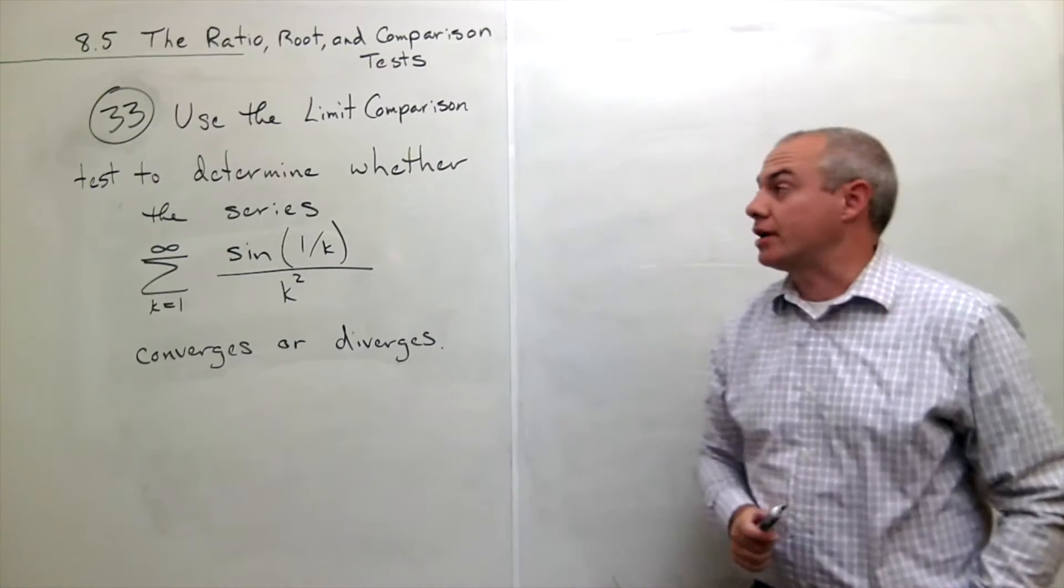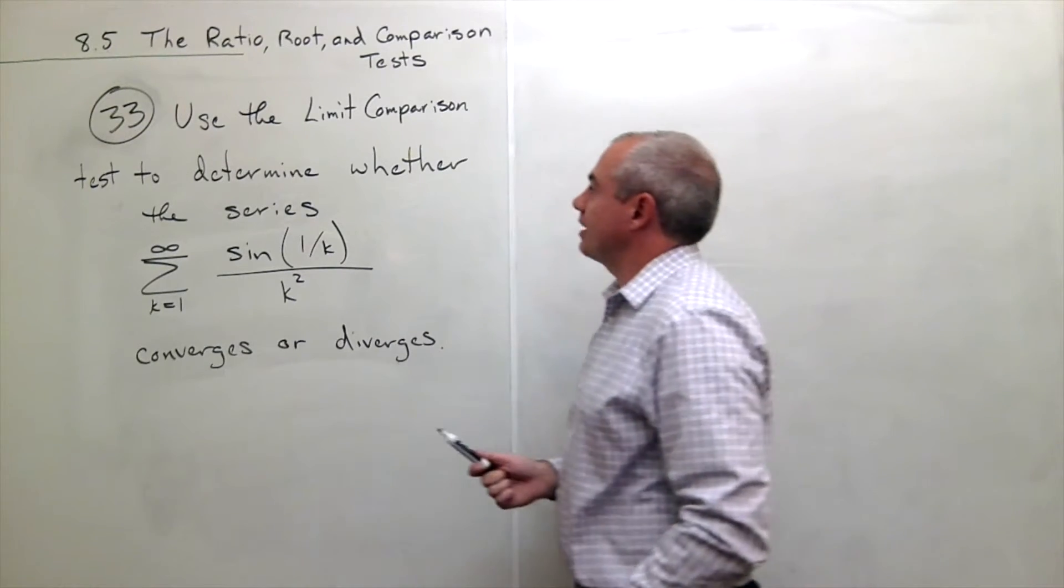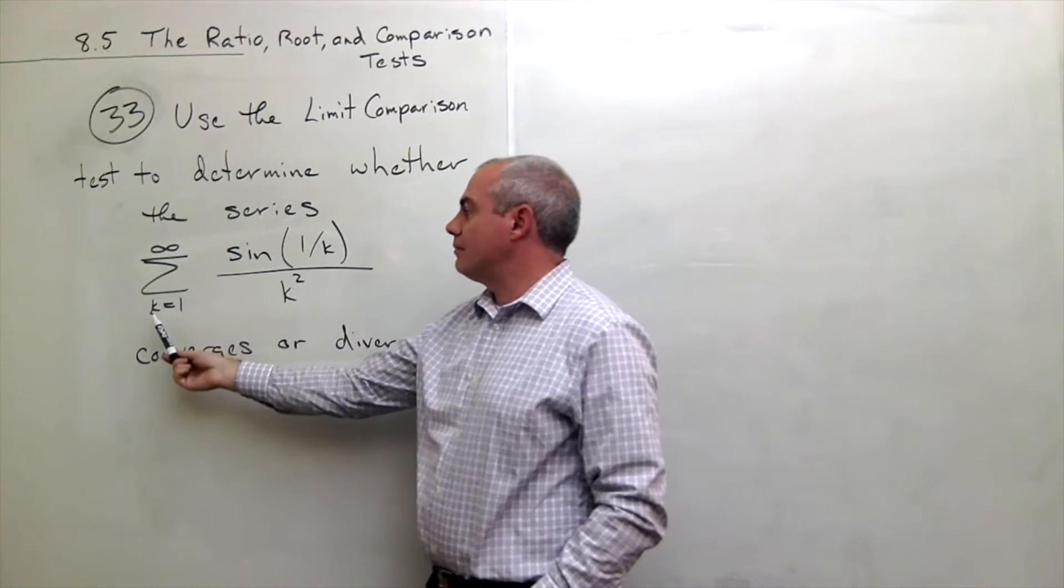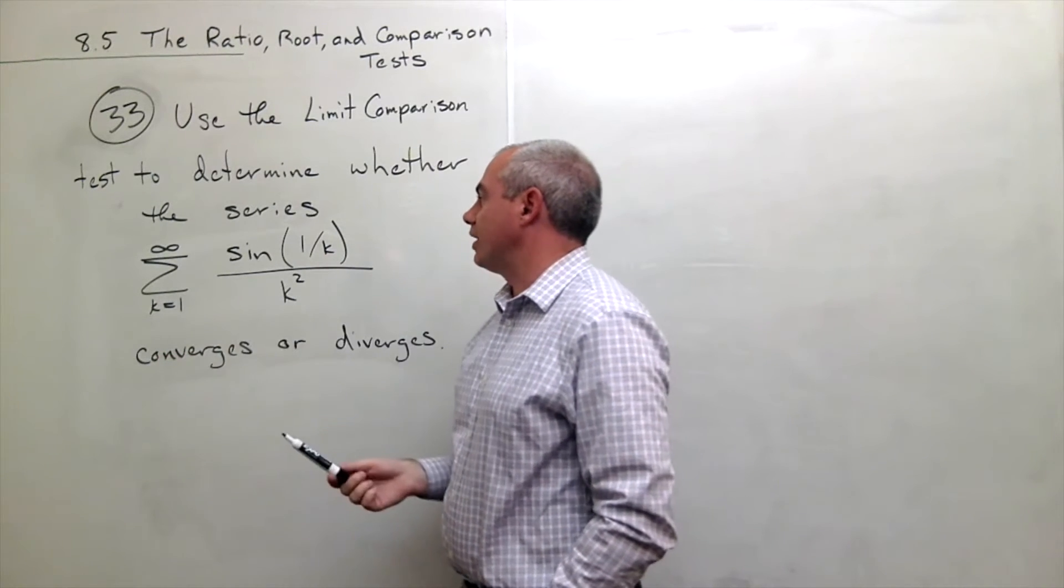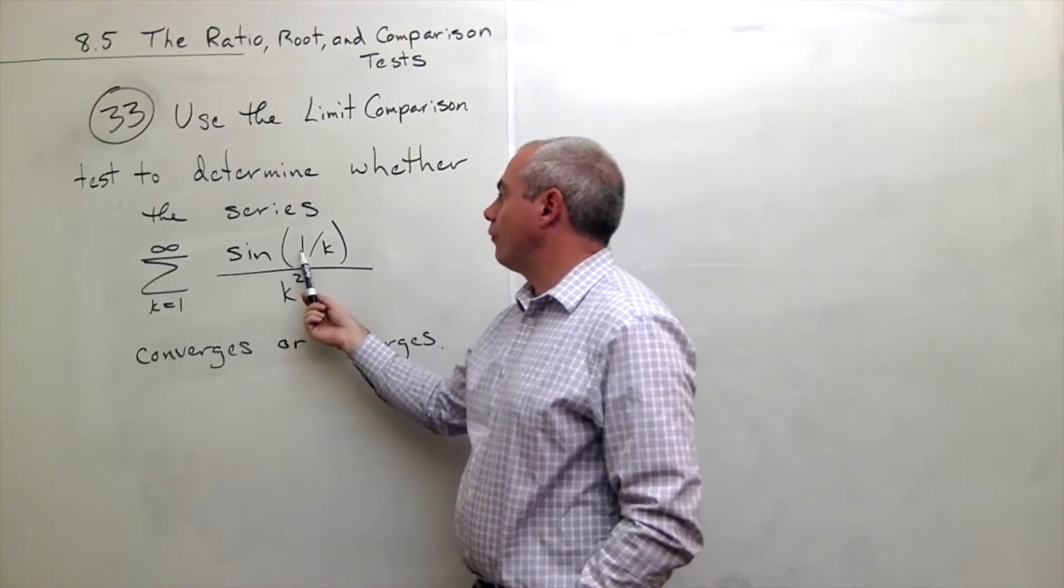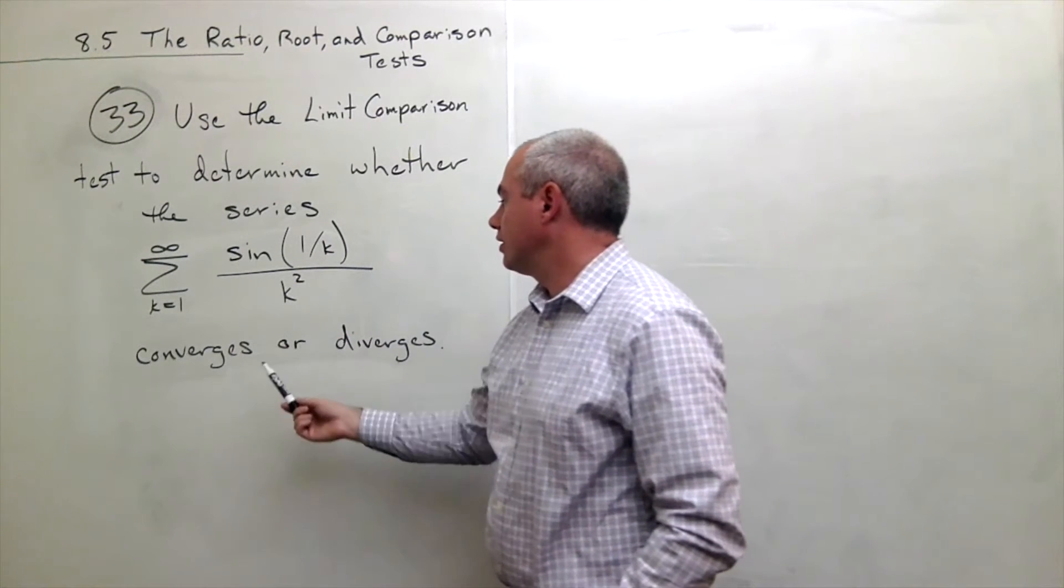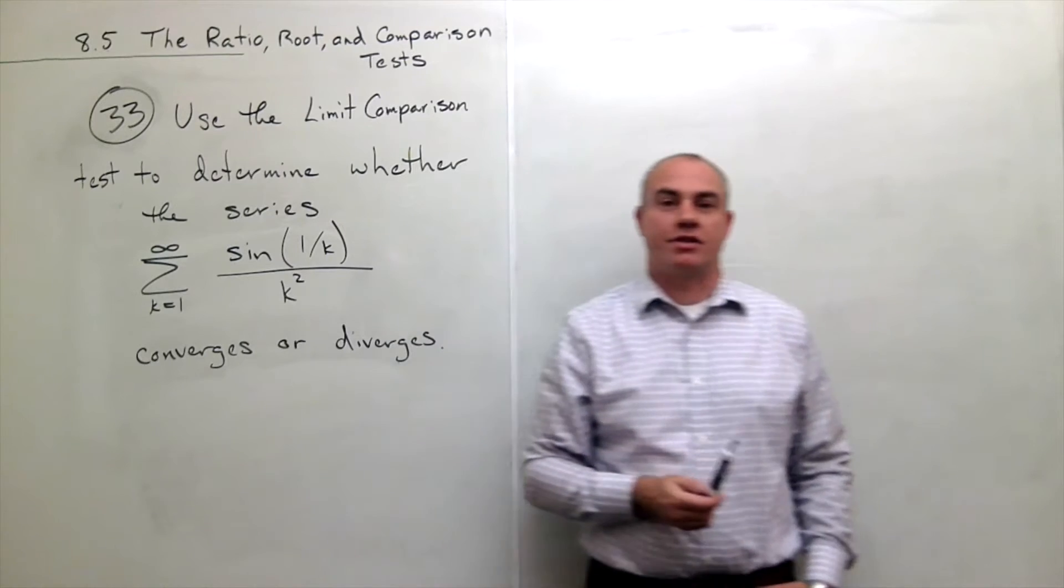In problem number 33, we'd like to use the limit comparison test to determine whether the series sum k going from 1 to infinity of sine of 1 over k divided by k squared converges or diverges.